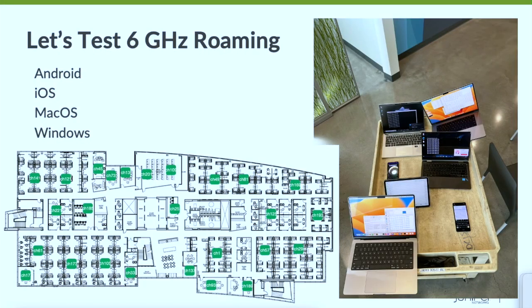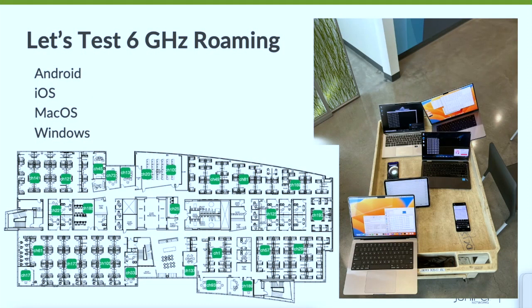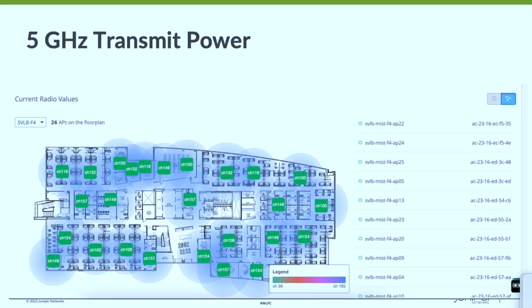Let's talk about roaming. The other thing that comes up is: will my devices actually discover 6 gigahertz? Now that we have a full device ecosystem, we did some testing with Android, iOS, macOS, and a couple of different Windows clients. This is our Juniper Sunnyvale office — 26 APs on this floor, all broadcasting a 5-plus-6 SSID.